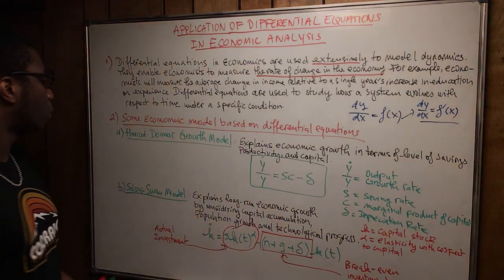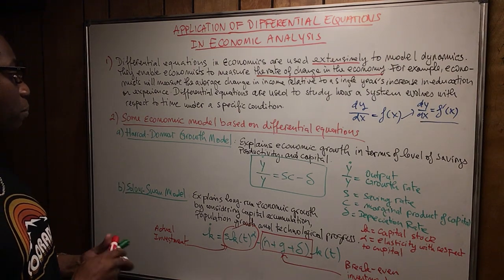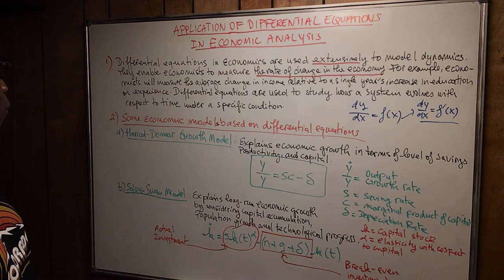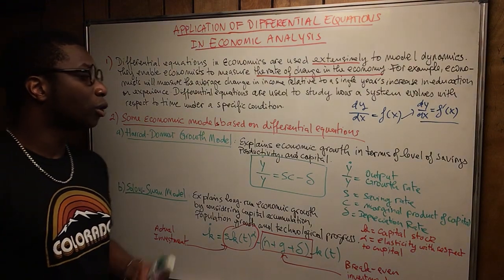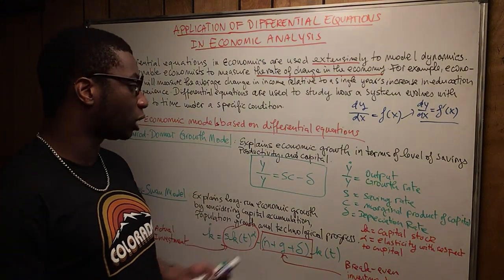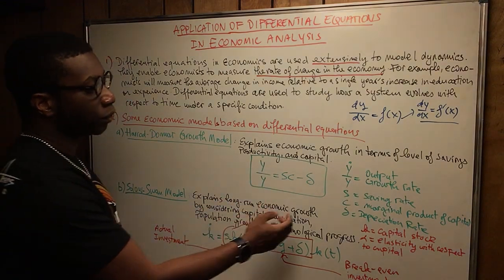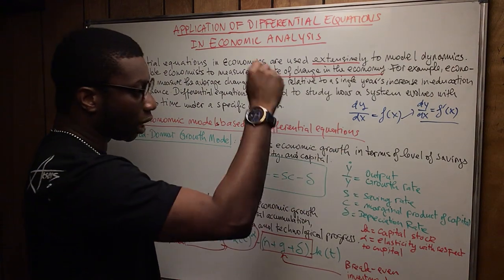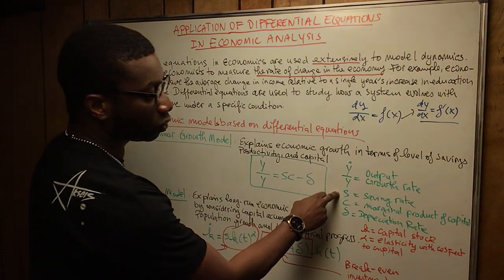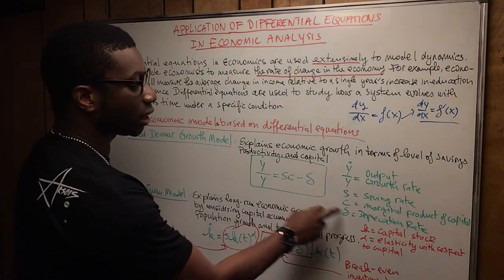I wrote here two very famous economic models based on differential equations. The first model is the Harrod-Domar growth model, which basically explains economic growth in terms of level of savings, productivity, and capital. In the equation, y-dot over y is the output growth rate, s is the savings rate, c is the marginal product of capital, and delta is the depreciation rate.